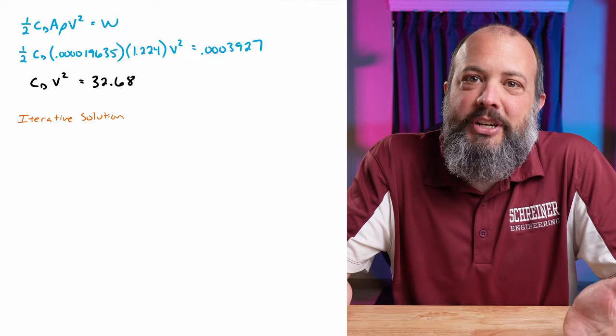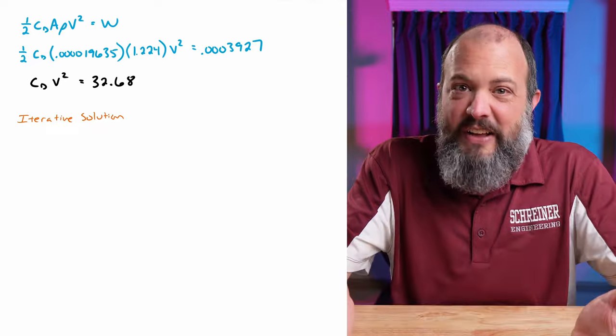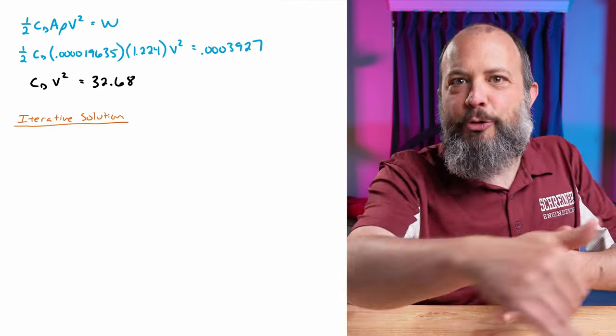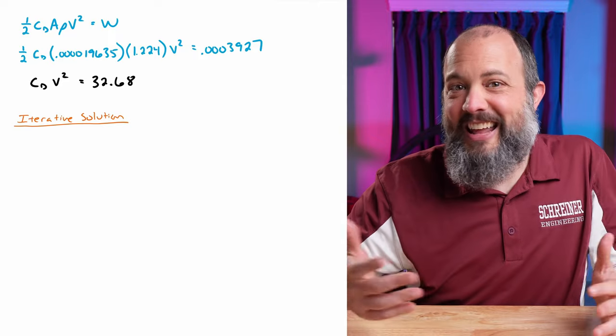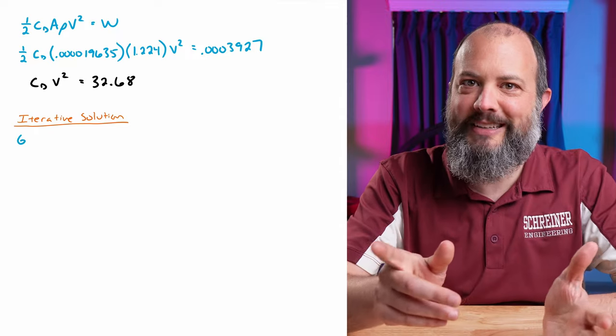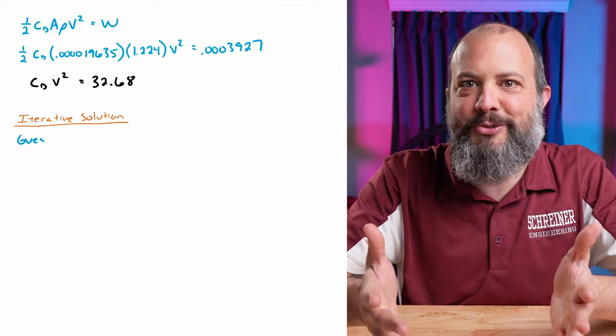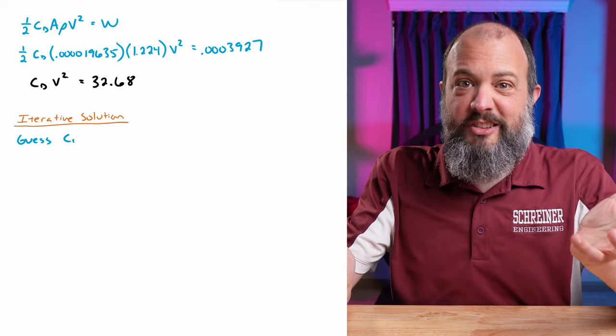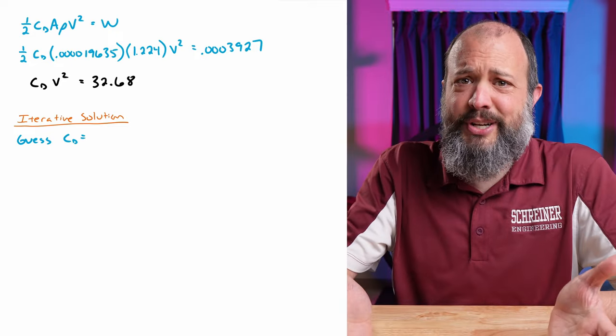And this is where the iterative solution comes into play. You just guess a value for one of them, solve for the other one, and see how close your guess was. And if it wasn't close enough, then you guess again, and you just keep going until you either get bored of it or until your answer doesn't change, which shows that your guess was correct. So without any good reason to choose any particular number, I'll choose a drag coefficient of one.